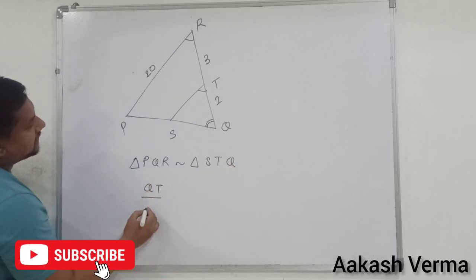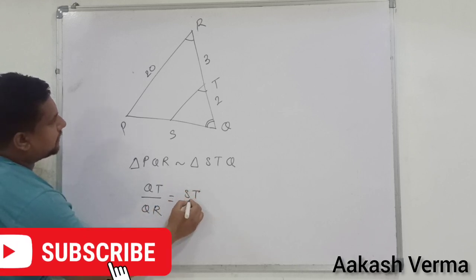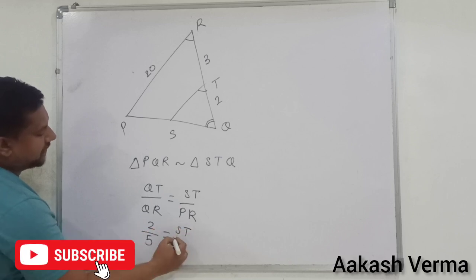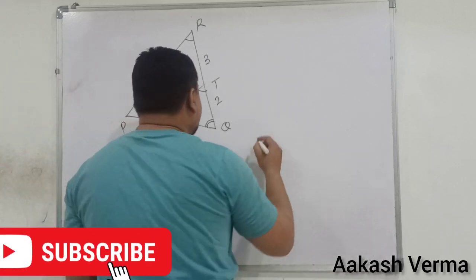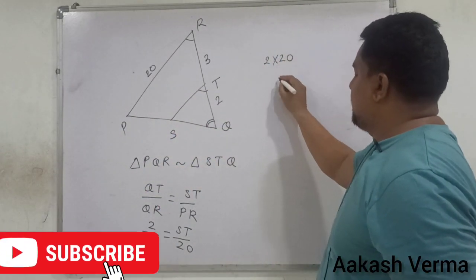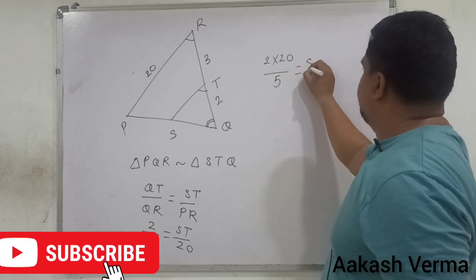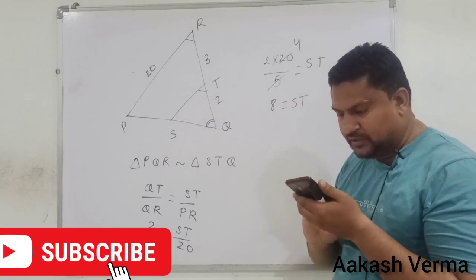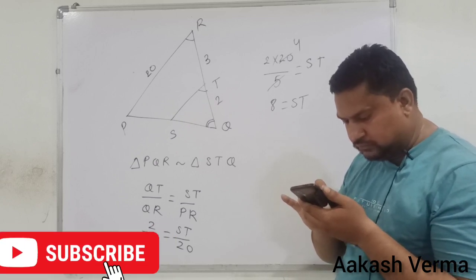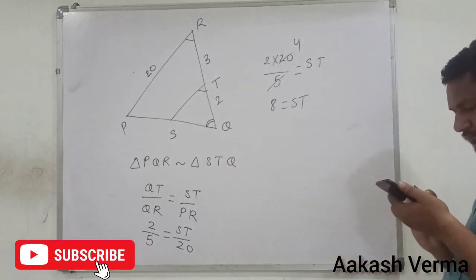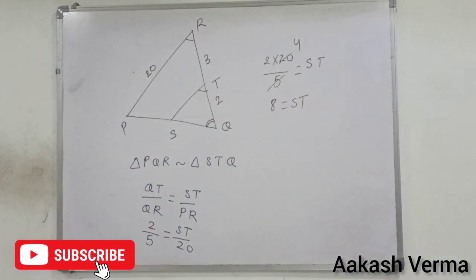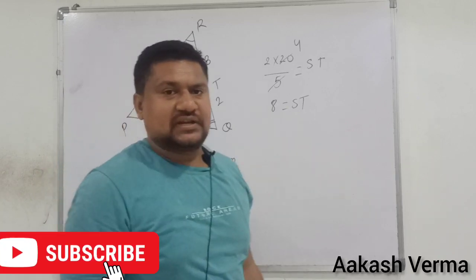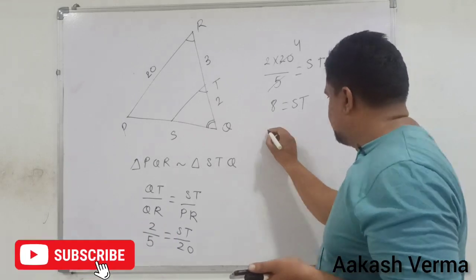तो यहाँ पे: QT divided by QR equals ST divided by PR. QT की value 2 है, QR कितना होगा — 5। ST की value find करनी है, PR की value है 20। Cross multiply करने पर: 2 multiply by 20 divide by 5 = ST। इसलिए ST की value 8 होनी चाहिए। तो option B is correct.